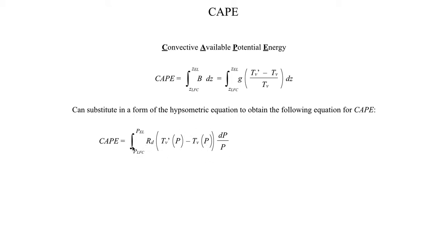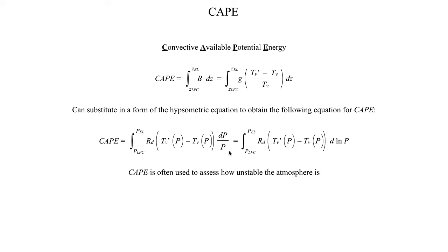So CAPE is defined as the dry air gas constant — which is 287 joules per kilogram per kelvin — multiplied by the temperature of the air parcel minus the temperature of the environment, where both are now functions of pressure rather than height, integrated as dp over p, which we can rewrite as d of the natural log of pressure.